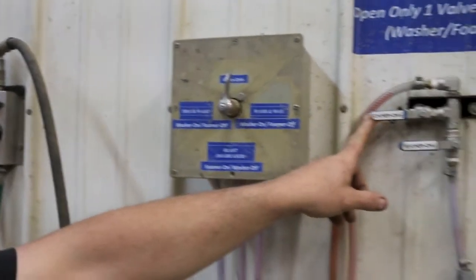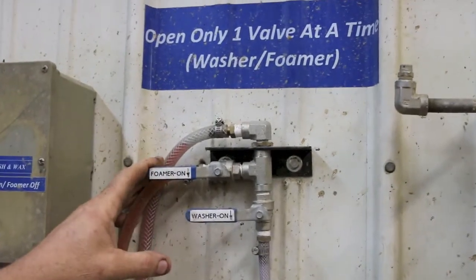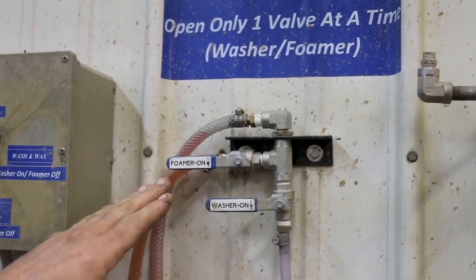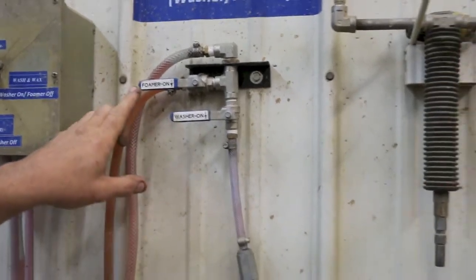And then here's the controls. You can use the soap on the pressure washer and you can also use it for the foamer, but you can only have one selected at a time. Most of the time you're going to be using the foamer.